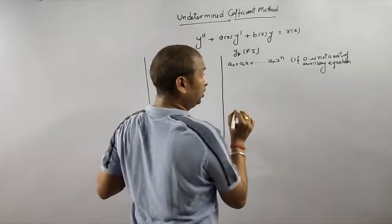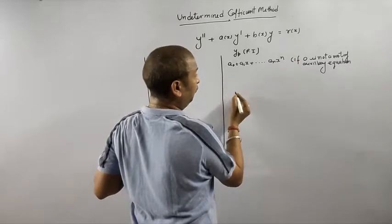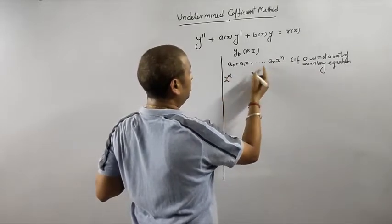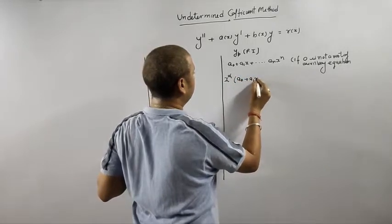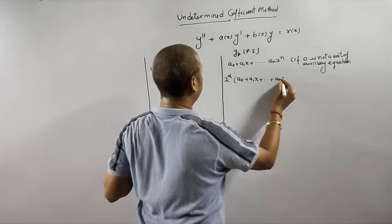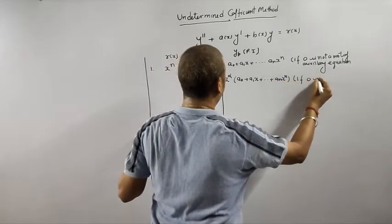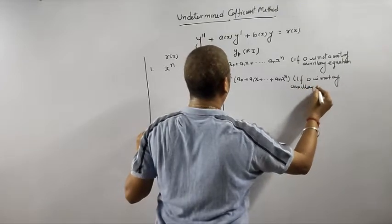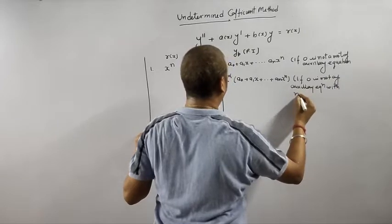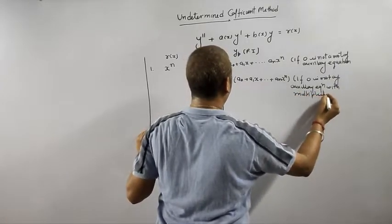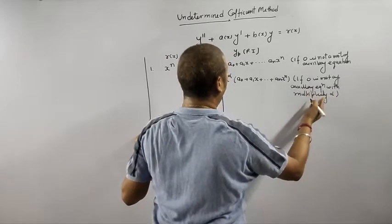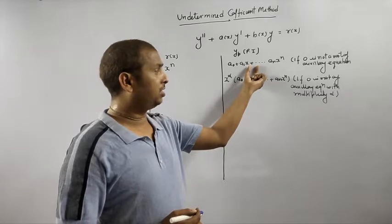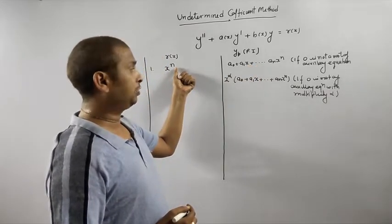If 0 is a root of the auxiliary equation, then we have to go for the modification rule — that is, multiply x to the power alpha with this particular integral. If 0 is a root of the auxiliary equation with multiplicity alpha, meaning it appears alpha times, then just multiply x to the power alpha with the given yp.